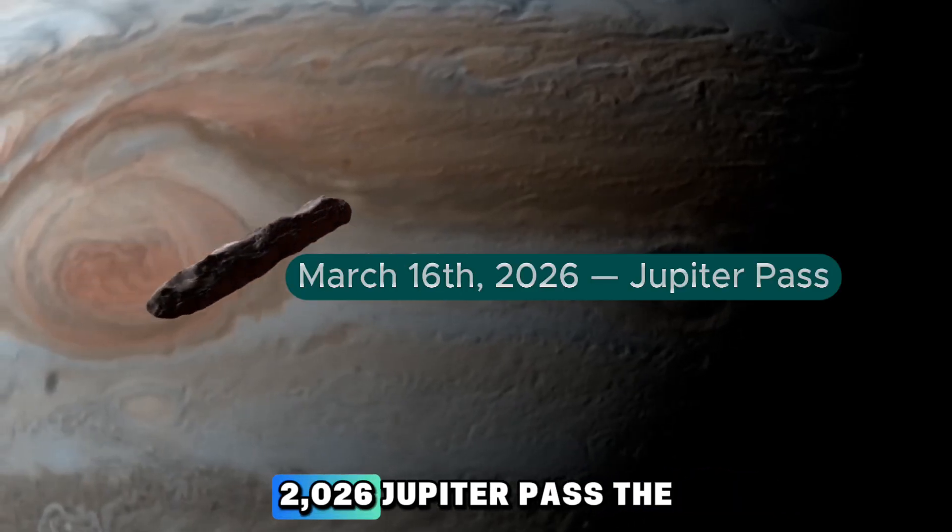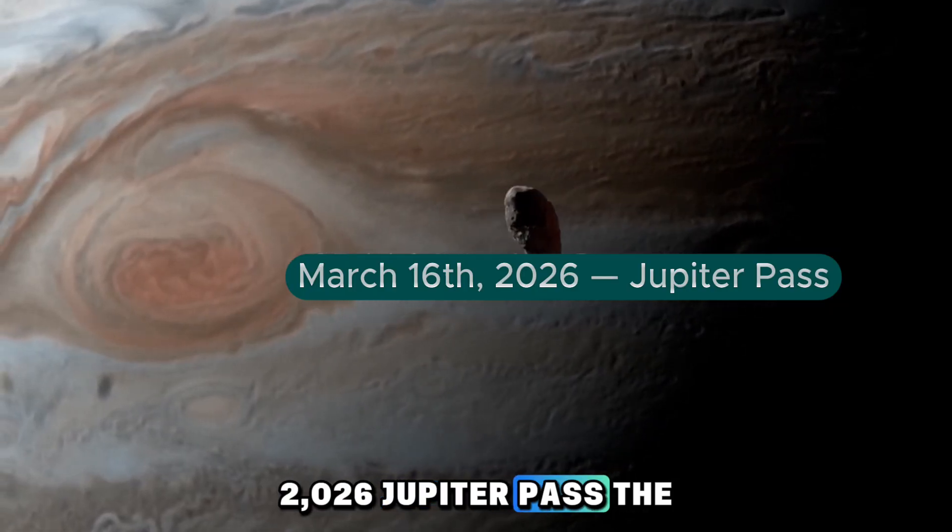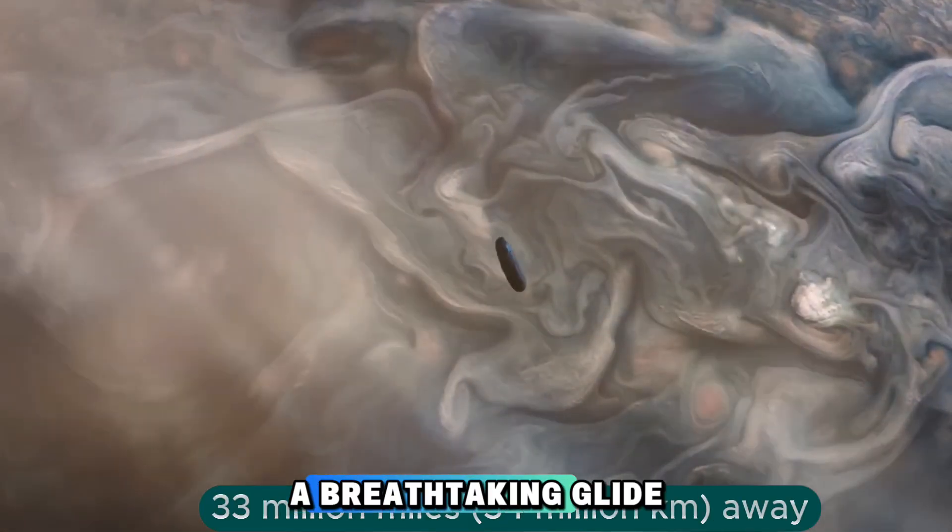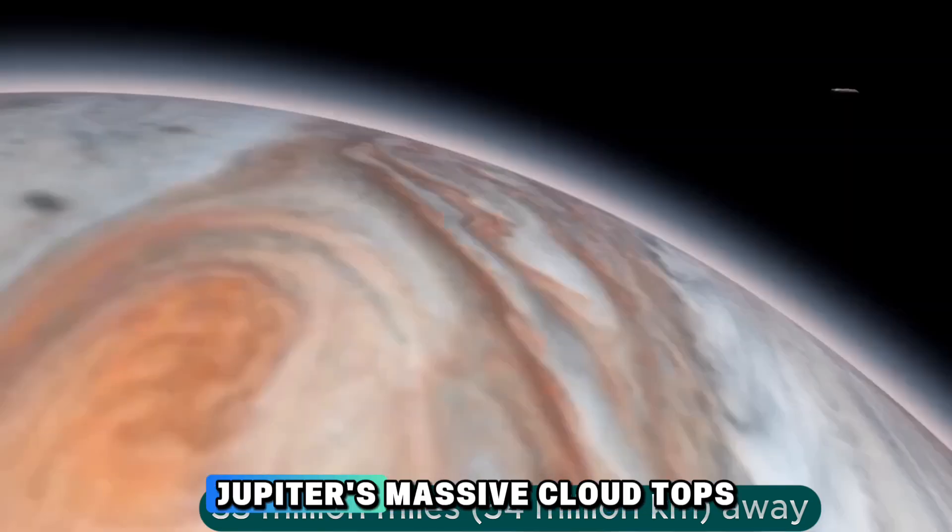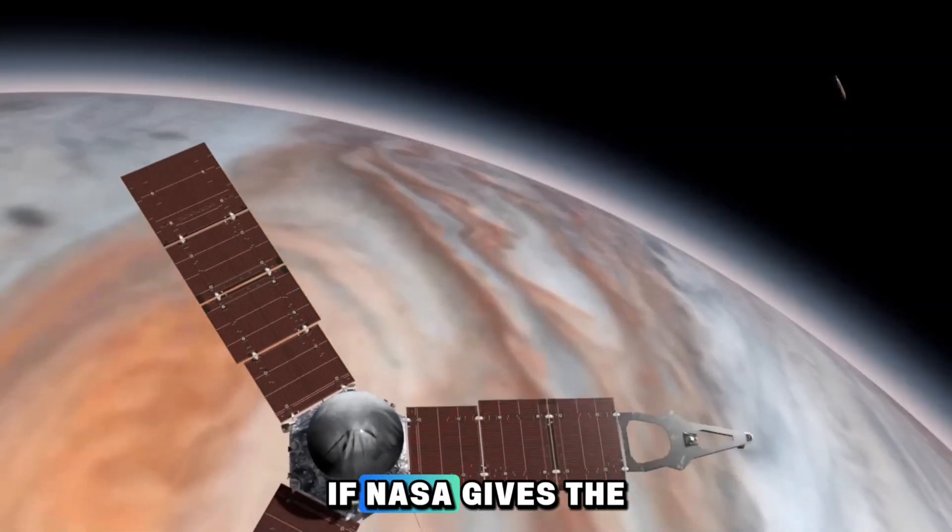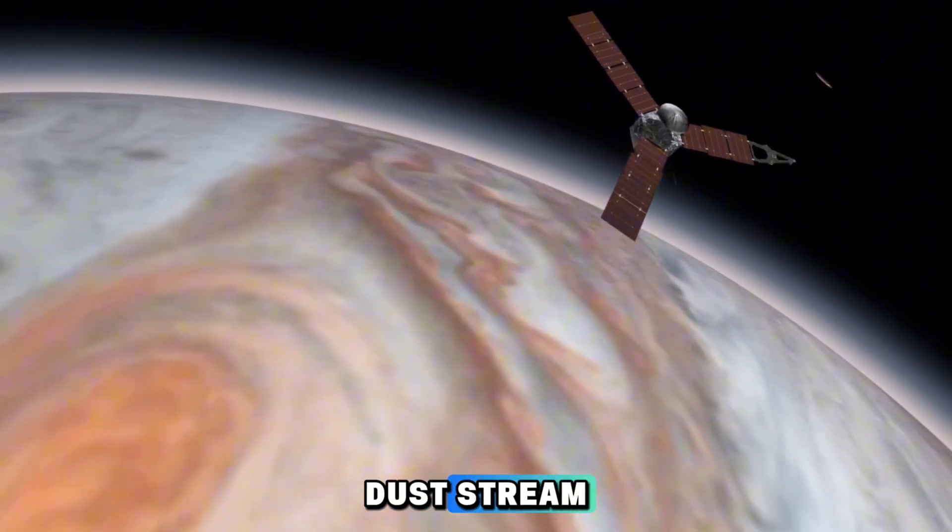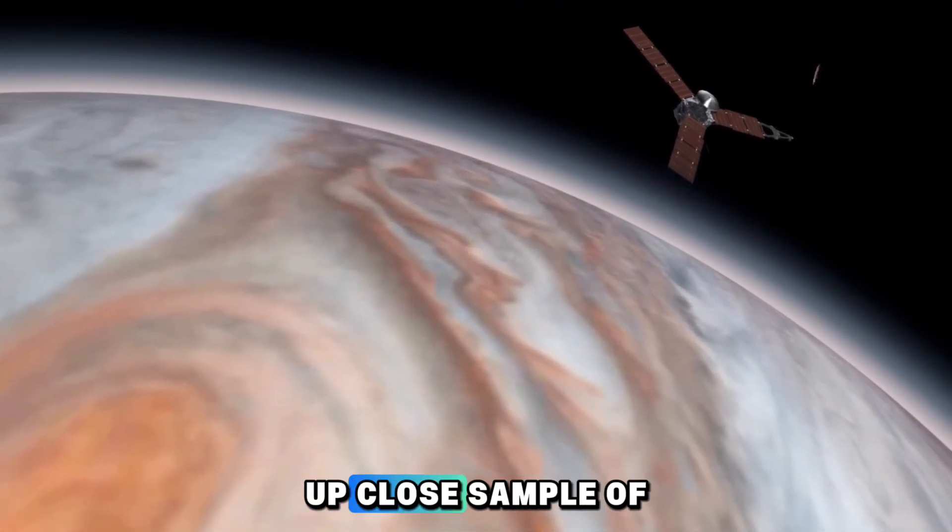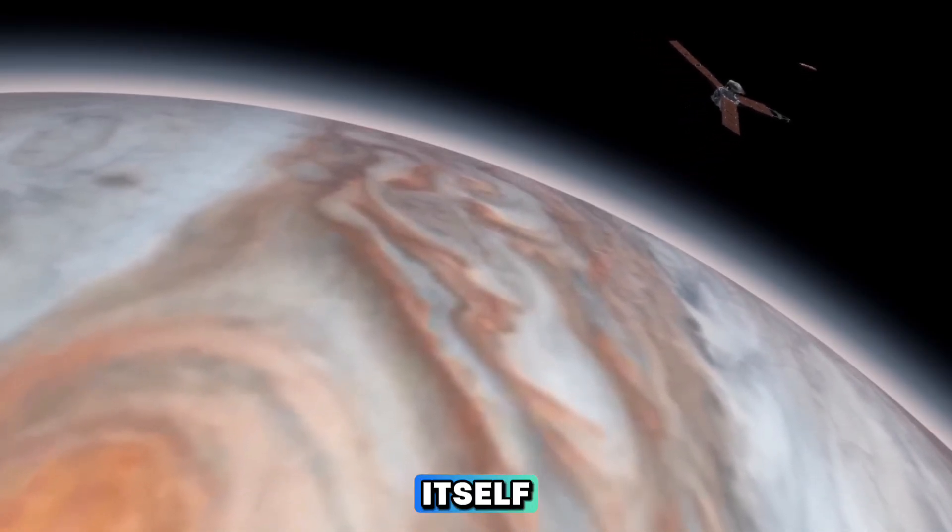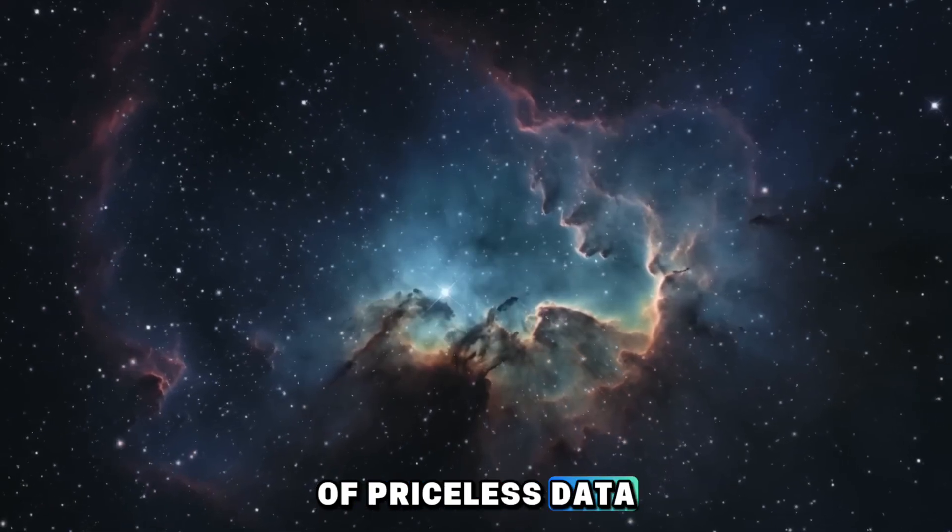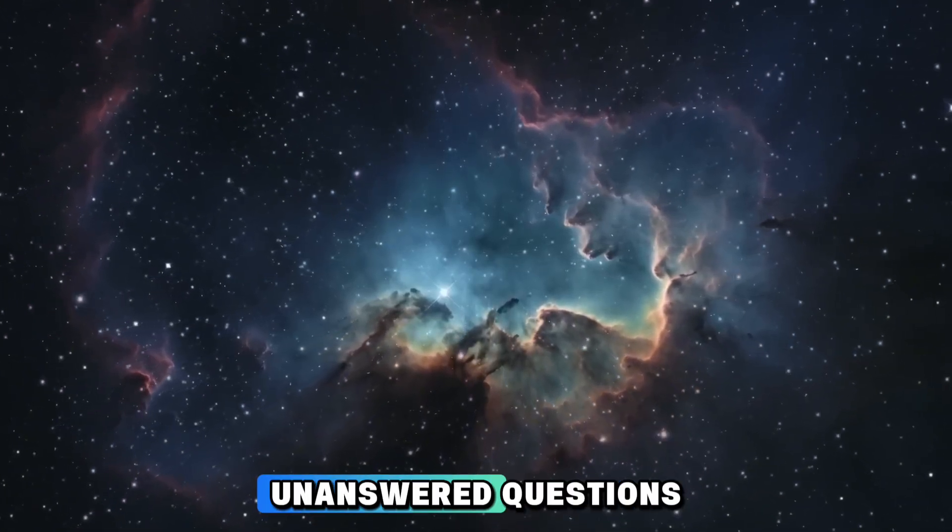March 16th, 2026. Jupiter Pass. The final act. 3I Atlas will make its last known approach, a breathtaking glide just 33 million miles above Jupiter's massive cloud tops. If NASA gives the green light, the Juno spacecraft could adjust its course to intercept the comet's dust stream, giving us humanity's first up-close sample of material forged beyond the sun itself. And then, just like that, it'll be gone. 3I Atlas will drift back into the endless dark between stars, leaving us with terabytes of priceless data and a mountain of unanswered questions.